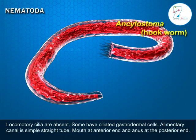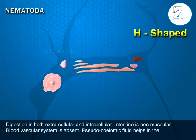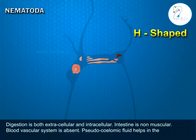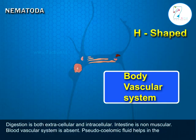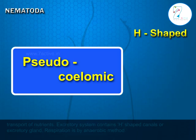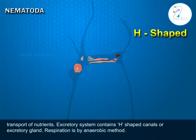The mouth is at the anterior end and the anus at the posterior end. Digestion is both extracellular and intracellular. The intestine is non-muscular. The blood vascular system is absent; pseudocoelomic fluid helps in the transport of nutrients.